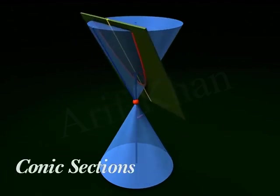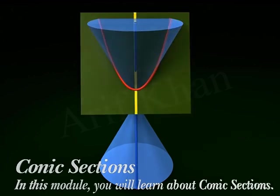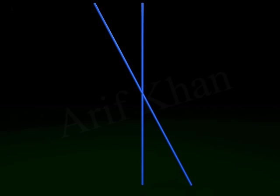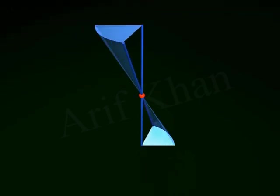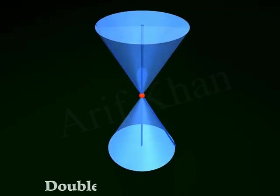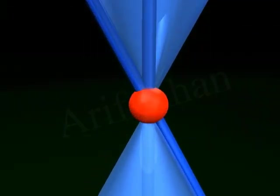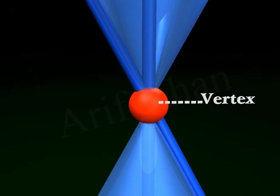Conic Sections. In this module, you will learn about conic sections. When a straight line intersects a vertical line at a fixed point and rotates about that fixed point, the surface obtained is called a double right circular cone. A double right circular cone consists of two cones joined at a fixed point called the vertex.